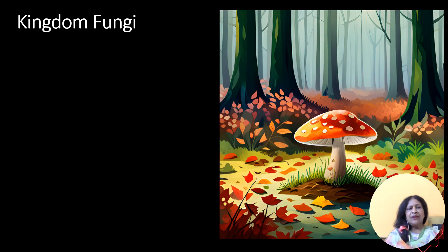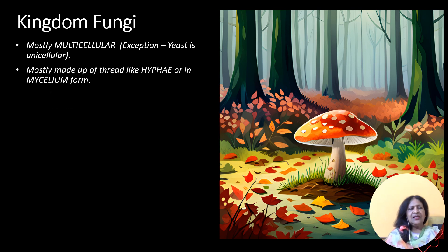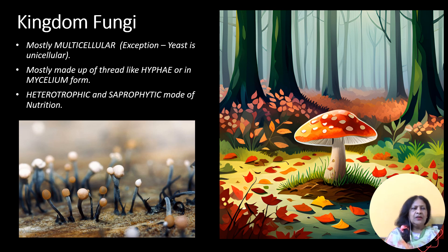The next is kingdom Fungi. They are metazomans or multicellular. Fungi's distinguishable features are that most of them being multicellular, as for example mushrooms and many more. But it also has unicellular representative like yeast. All the cells are eukaryotic types, that is with a well-developed nucleus.